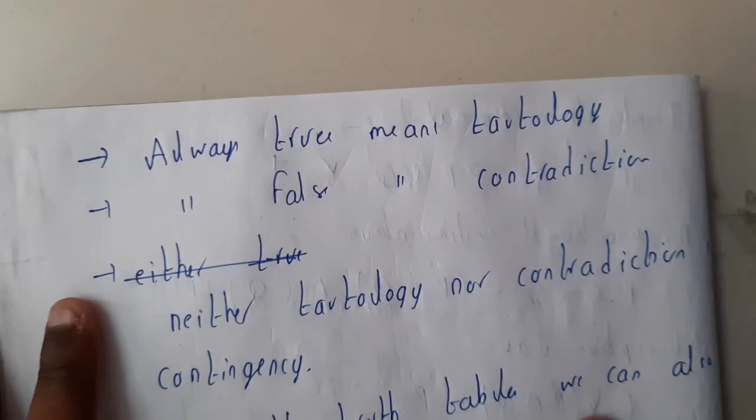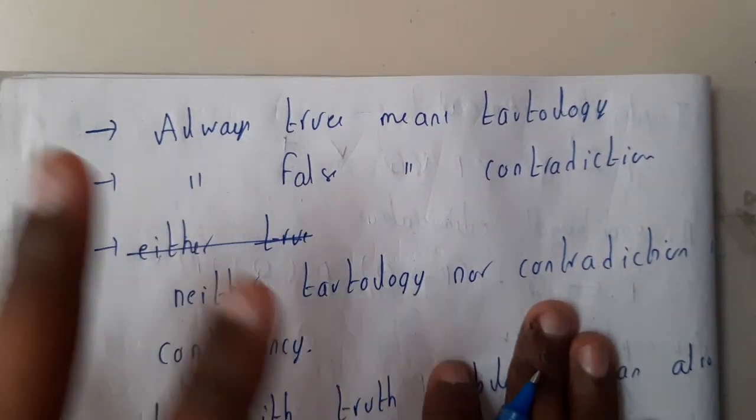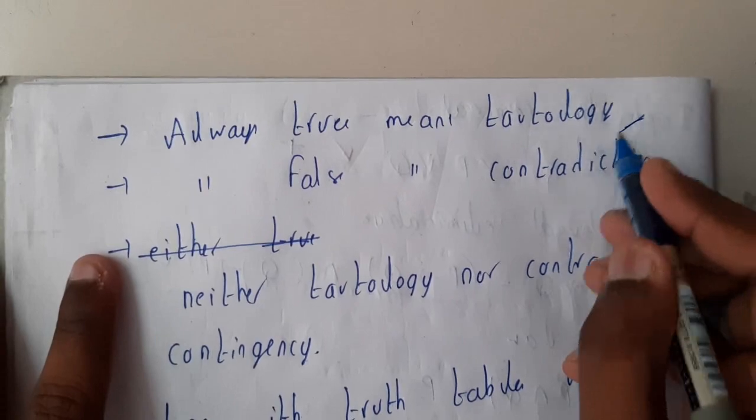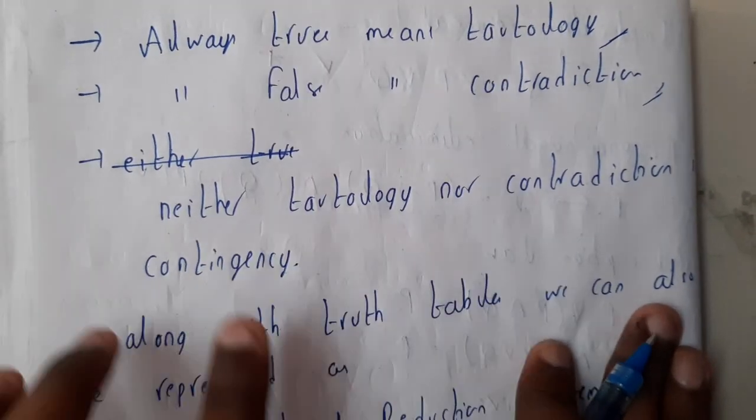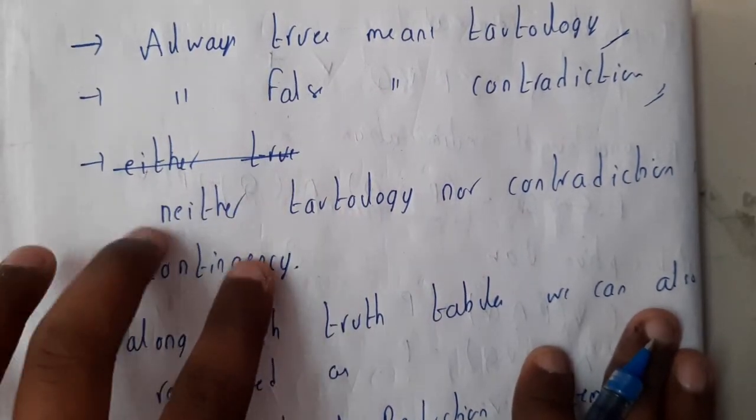There are a few more things. Basically, whenever a truth table is getting all truths, like the result all truths means a tautology, and all false means contradiction. So neither tautology nor contradiction means contingency. Contingency is nothing but the combination of true and false which we get normally.